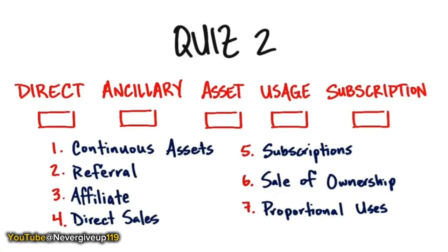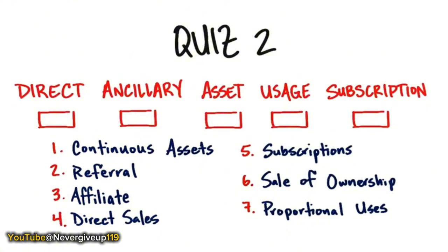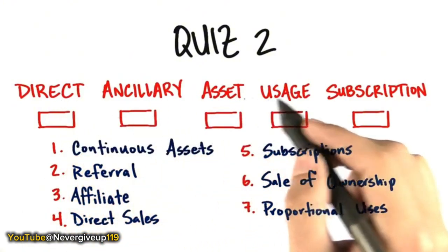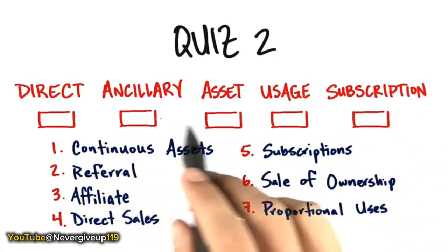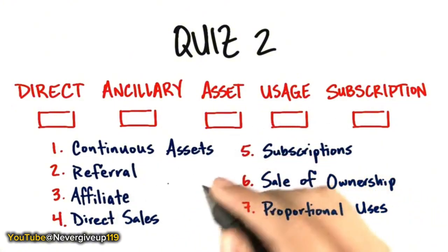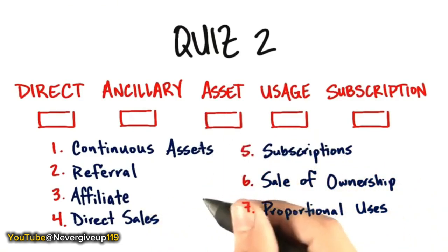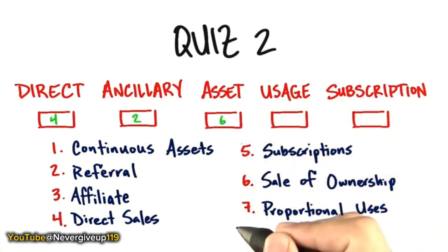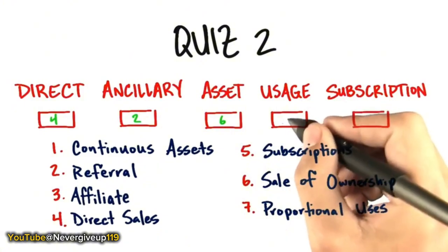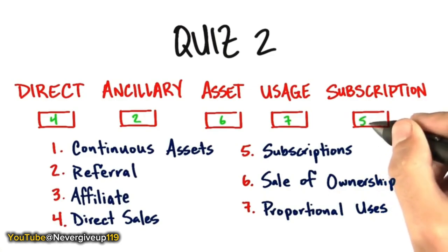Let's see if we understand revenue streams. On the top we have example revenue stream possibilities: direct, ancillary, asset, usage, or subscription. Match the best examples to each box. Direct would be a direct sales force; ancillary would be referral revenue; an asset revenue stream would be sale of ownership; usage would be proportional users; and subscriptions could be a flat monthly or annual fee.